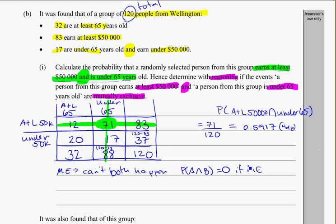So if they want us to test whether or not the events 'being under 65' and 'earning at least $50,000' are mutually exclusive, we can look at that. So if we're at least $50,000 and under 65, we just found that that probability was equal to 0.5917.